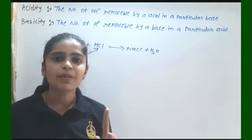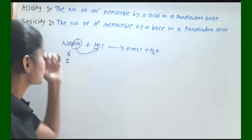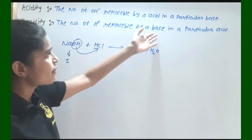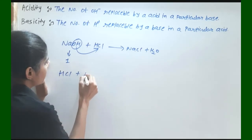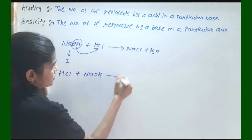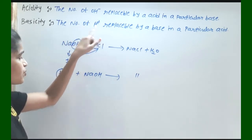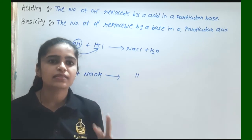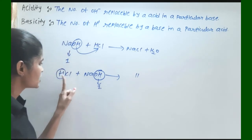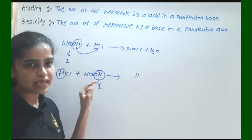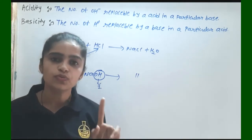Always consider replaceable ions — replaceable OH⁻ or replaceable H⁺. The number of H⁺ replaceable by base in a particular acid: consider HCl plus NaOH. The number of H⁺ ions is 1, and it is replaced by OH⁻, which is also 1. So the H⁺ replaceable by the base gives the basicity of that acid. Its basicity is equal to 1.